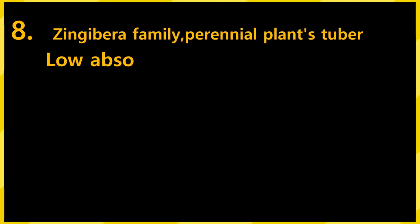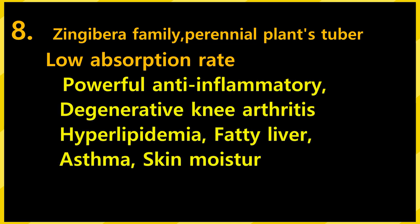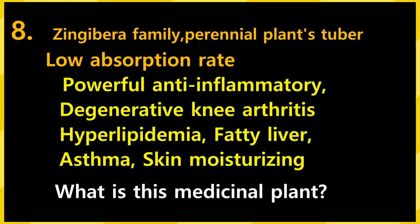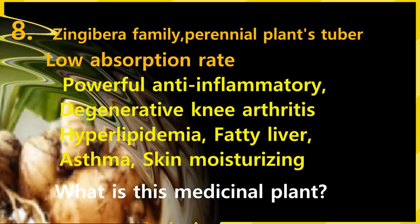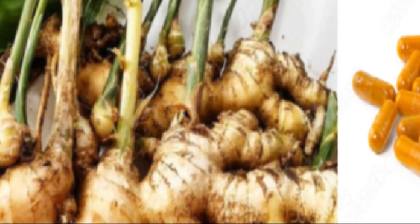The first plant is the underground stem of a perennial plant of the ginger family. A disadvantage of this plant is that the absorption rate after ingestion is low. In addition to the treatment of diabetes, it has strong anti-inflammatory properties, with many clinical studies showing improvement of symptoms of degenerative knee arthritis, dyslipidemia, fatty liver, asthma, and skin-brightening effects. What is the name of this plant? It is turmeric — I think you know it well.